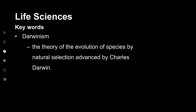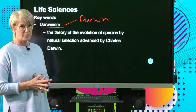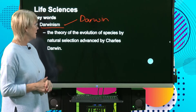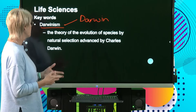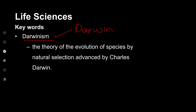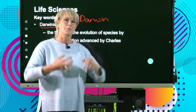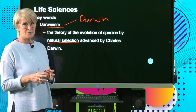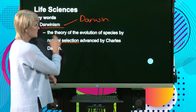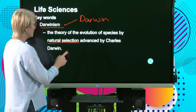The next concept is Darwinism, named after Charles Darwin, who was famous for his studies in the Galapagos Islands and around the world. He traveled on a ship making observations and came up with a theory where species evolve through what he called natural selection. Selective pressures from the environment ensured that favorable characteristics were selected, and those organisms would then survive.